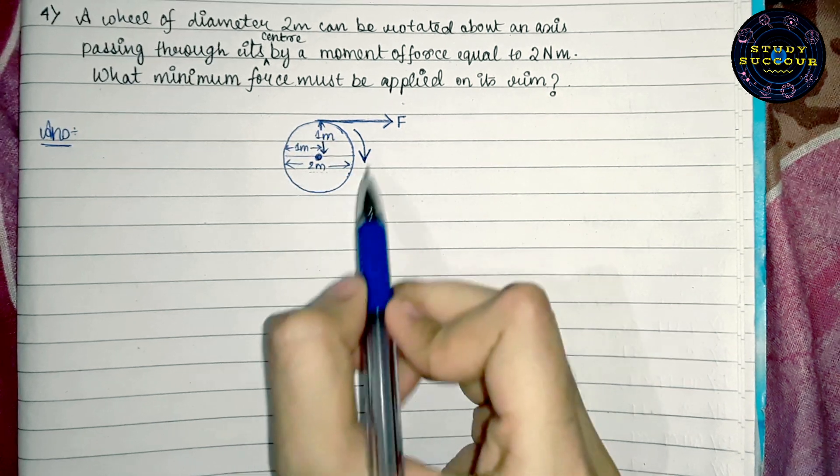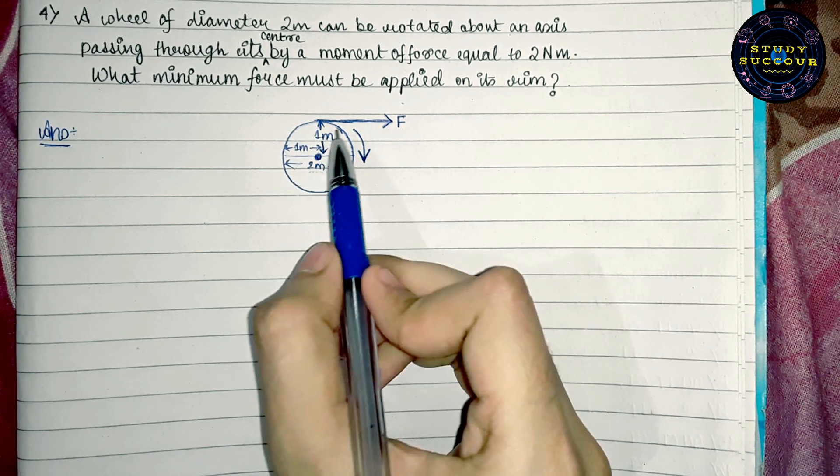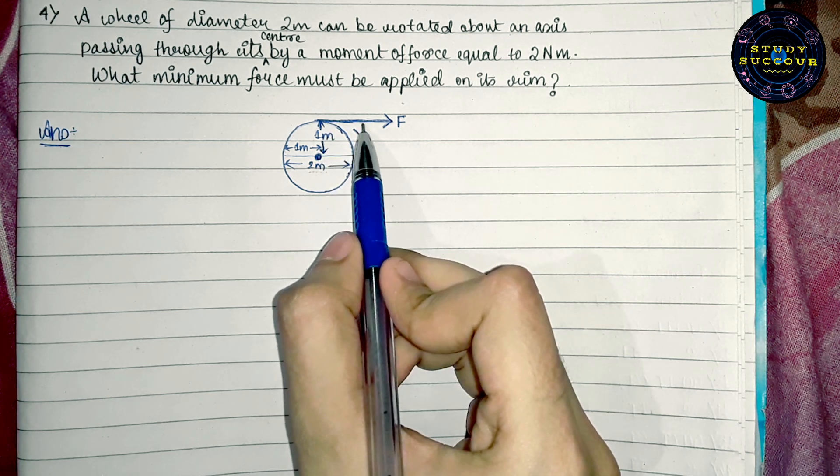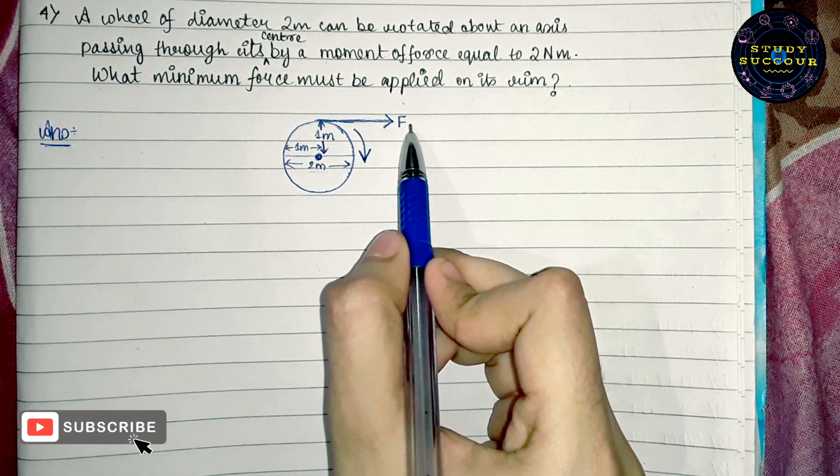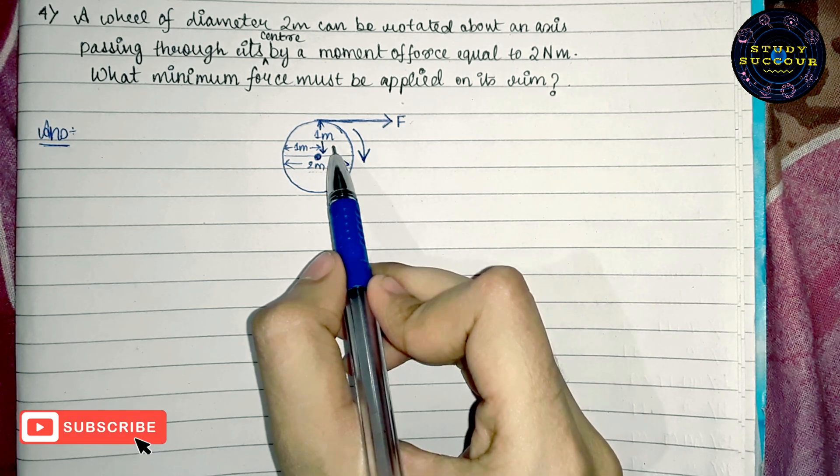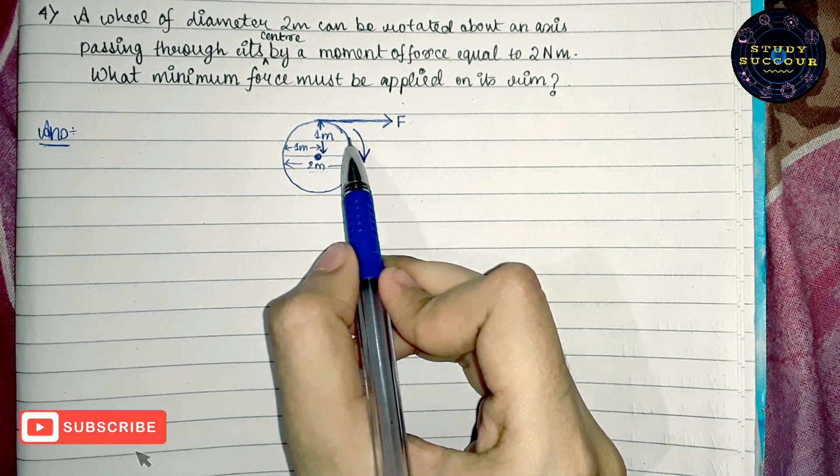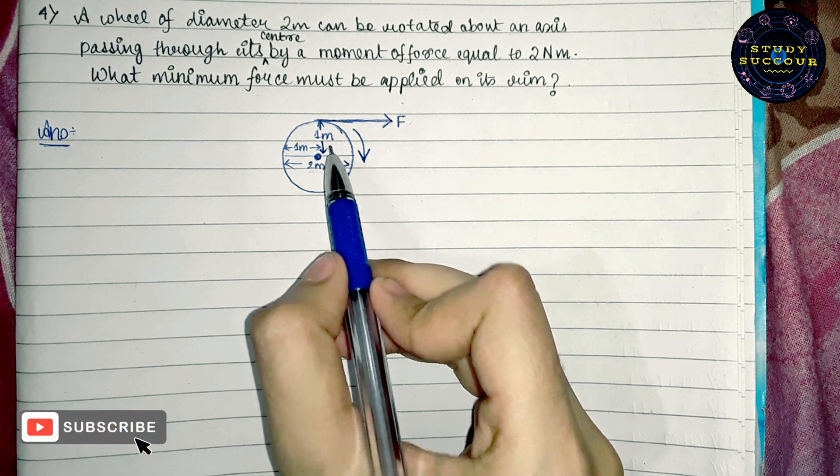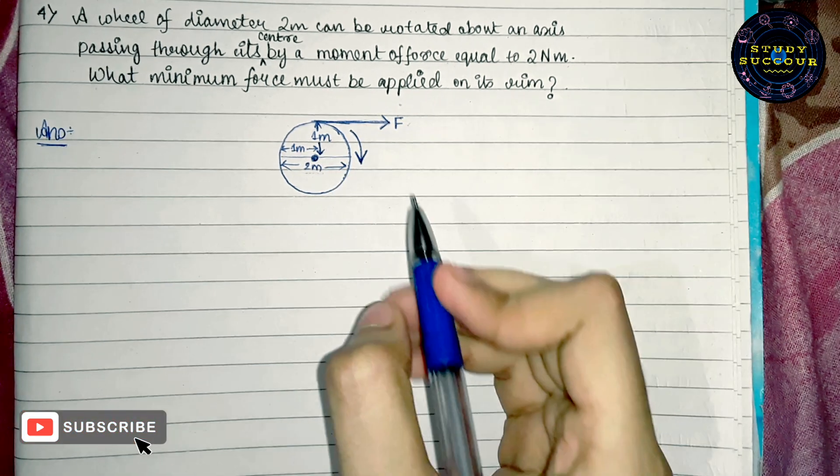Also, we know that in a circle, its radius is perpendicular to its tangent. So, here we can conclude that the force applied is perpendicular to the radius of the circle which is also the perpendicular distance from the force.